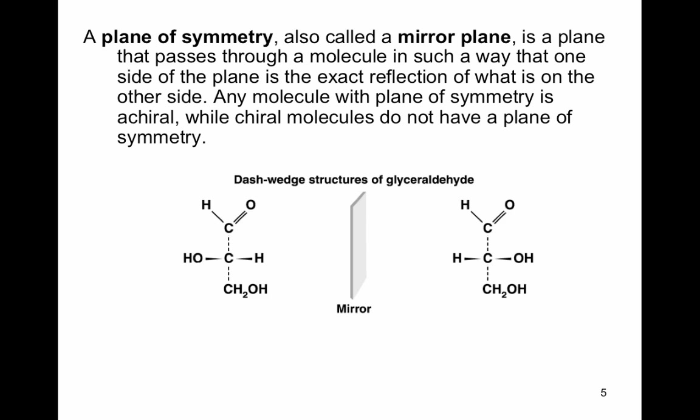A plane of symmetry, also called a mirror plane, is a plane that passes through a molecule such that one side is exactly the reflection of the other. For example, our bodies have a plane of symmetry right down the middle — the left and right sides are symmetrical. Planes of symmetry can be vertical, horizontal, or in any direction. If a molecule has a plane of symmetry, it's achiral. Chiral molecules do not have a plane of symmetry.